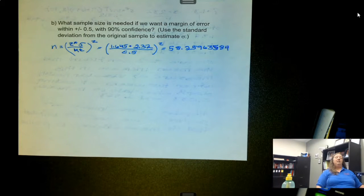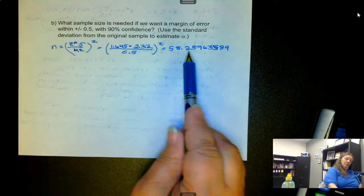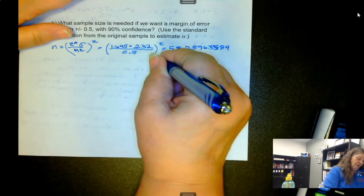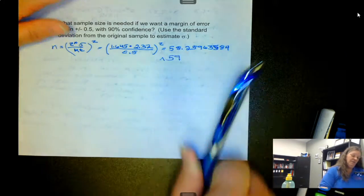Now, as I said when we did this with proportion, this is the minimum number we need to survey, so we don't want to lose this decimal amount. So we are going to round it up to 59.